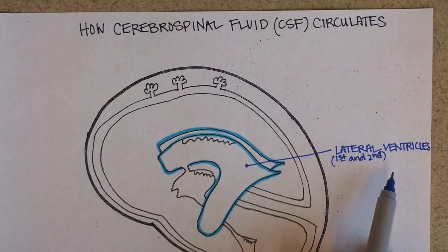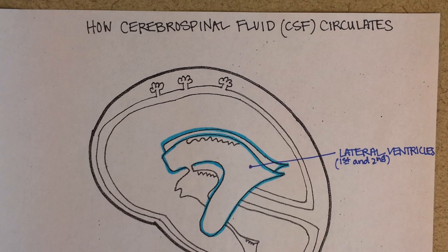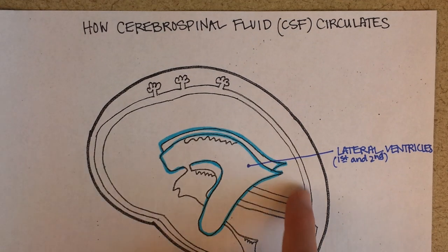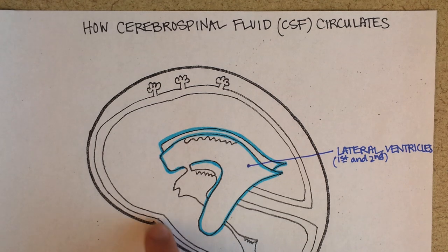Cerebrospinal fluid is a fluid that fills cavities inside of the brain, and those cavities are called ventricles. You have cerebrospinal fluid — it's clear and watery, kind of like plasma — in four different ventricles, and then it also goes up and around the outside of the brain.